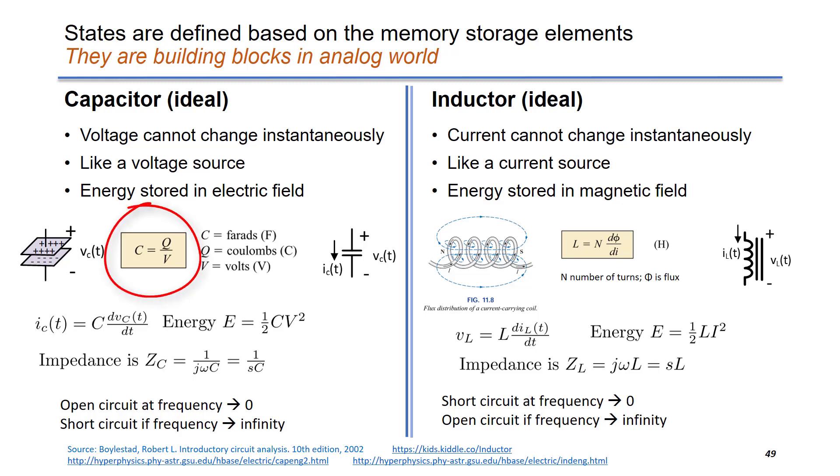The capacitance is defined as the charge over voltage. By this equation, we can see that given the same voltage V, if you have higher capacitance C, you can hold more charge. This is the schematic diagram. This is the schematic symbol and the voltage and current convention inside the capacitor.